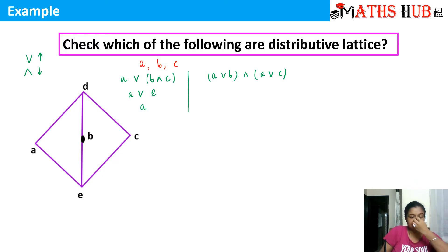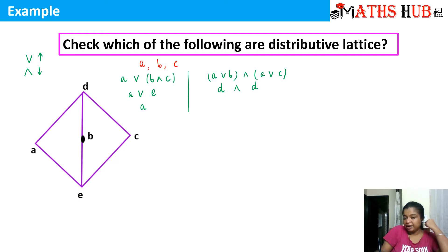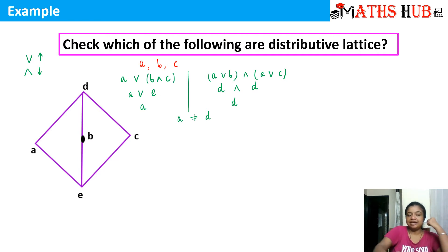Now let's come to the right-hand side. A join B is the element D. And A join C is the element D again. And D meet D is the element D. So is the left-hand side equal to the right-hand side? No, it is not.